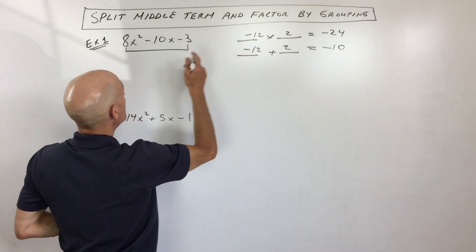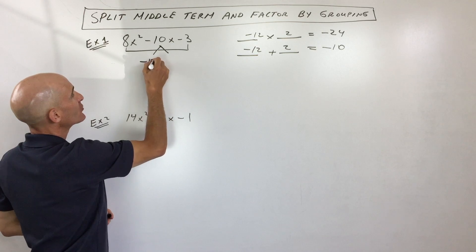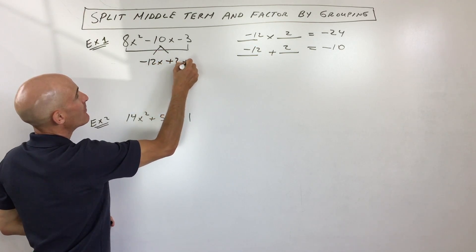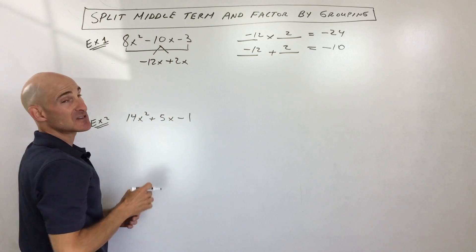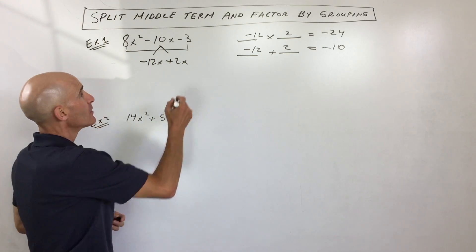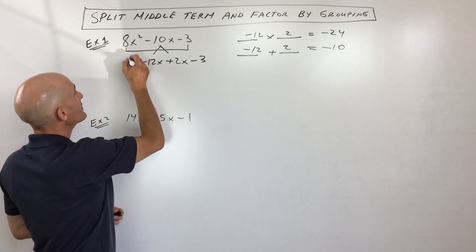Now what we do is we take these two numbers and we split the middle term into negative 12x and positive 2x. They'll still add up to negative 10x. So we haven't changed the problem at all. We just changed the way that it looks.